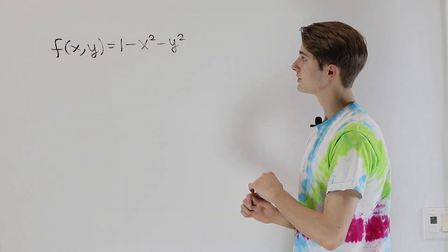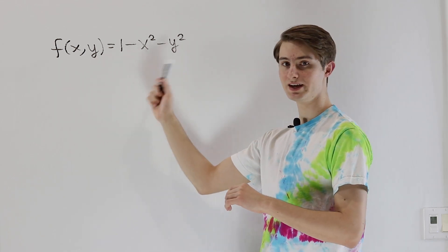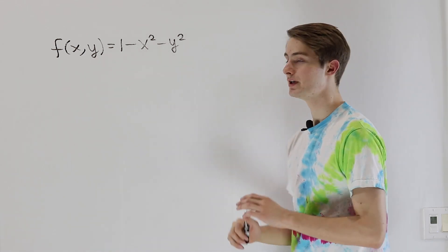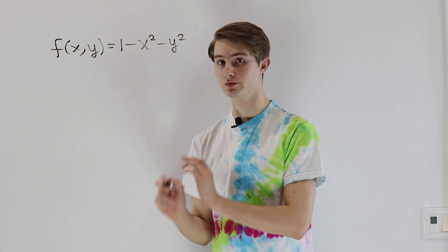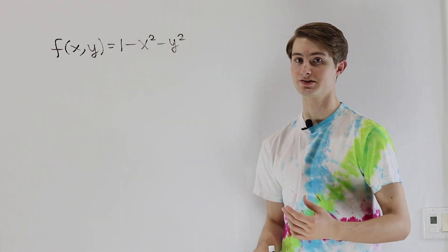So in this case, we're going to look at the function f equals 1 minus x squared minus y squared and figure out how we can take the derivatives of this function in a way that makes sense.